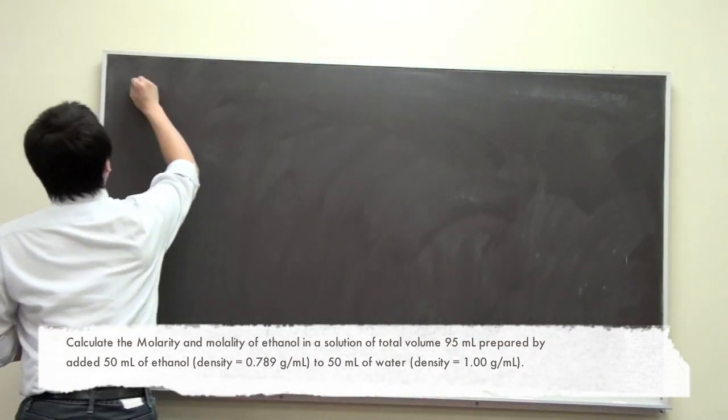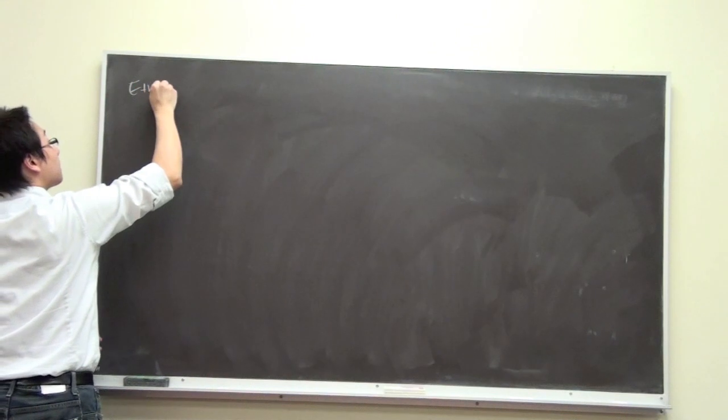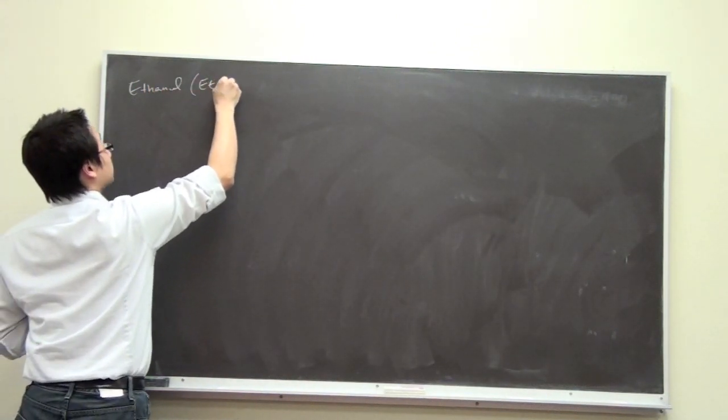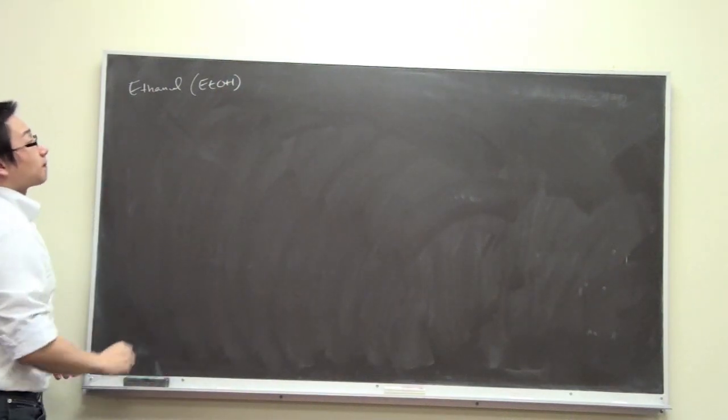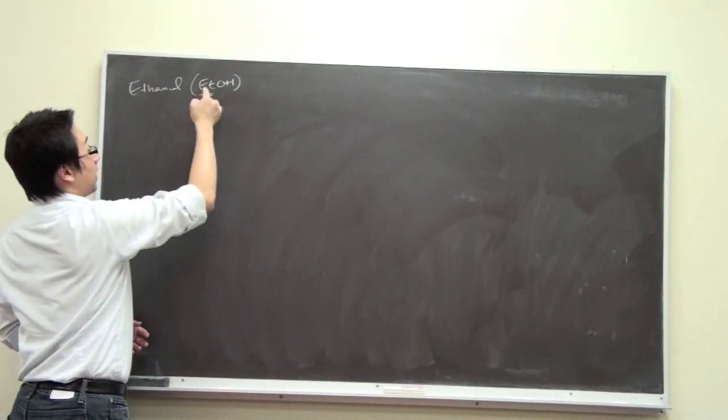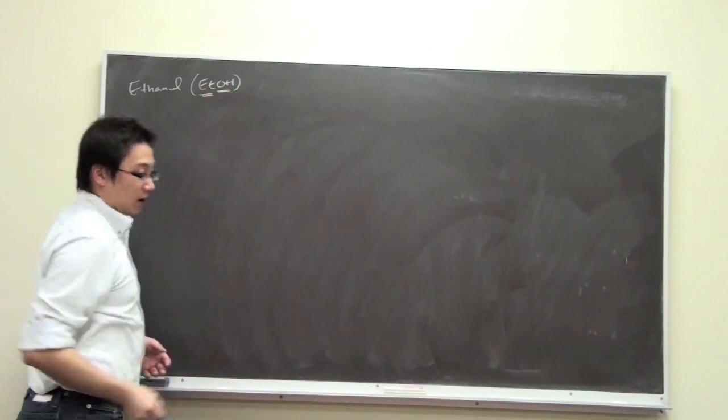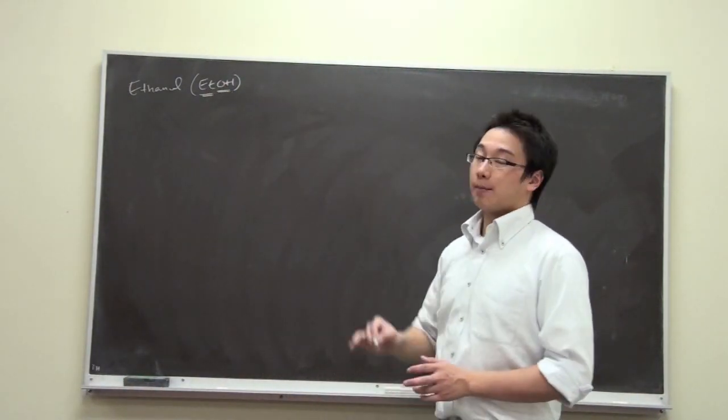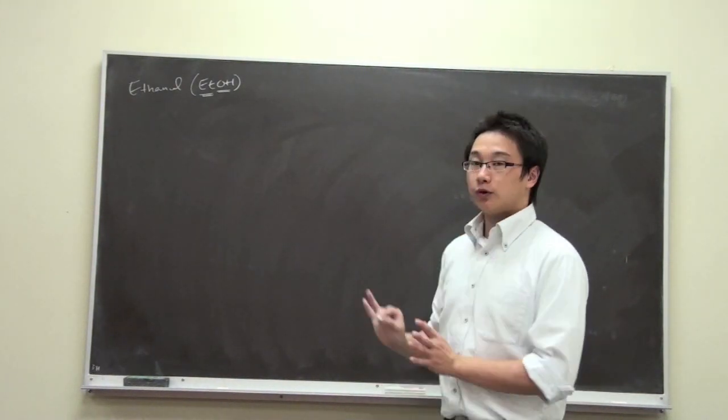So we have ethanol, and I'm going to use a shorthand for the ethanol, E-T-O-H. Because this is the ethanol prefix. For the alcohol, we always have a hydroxyl group, the O-H, at the end, so this is how I would write the ethanol.